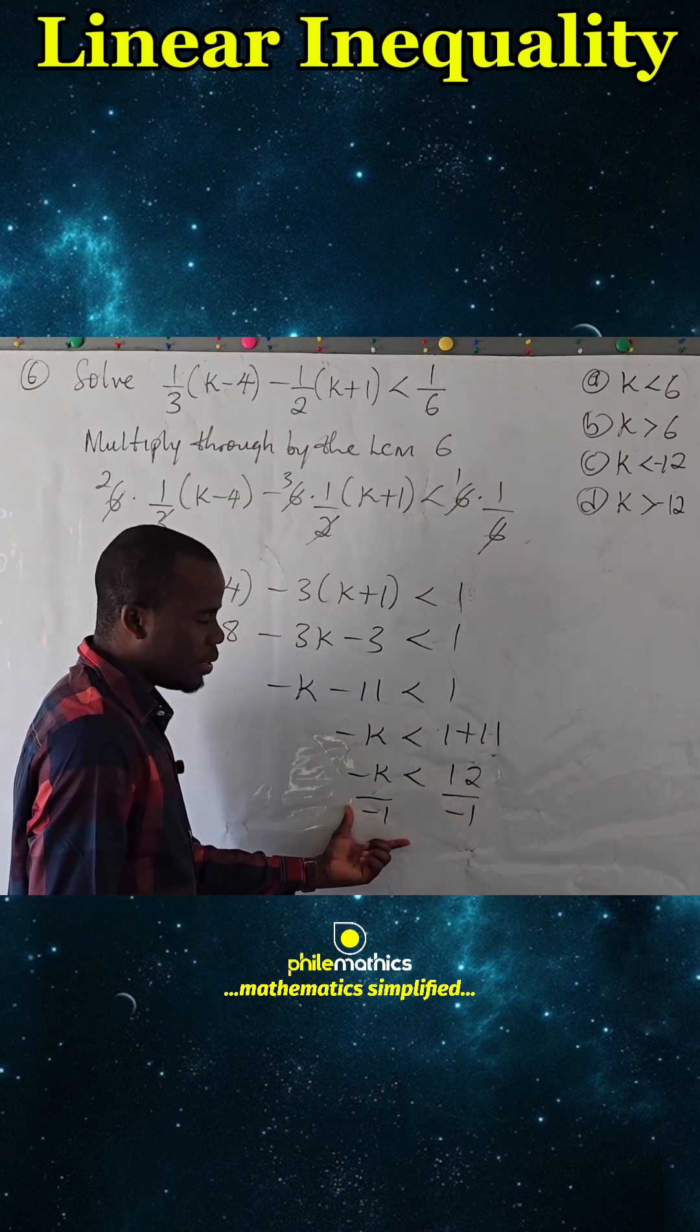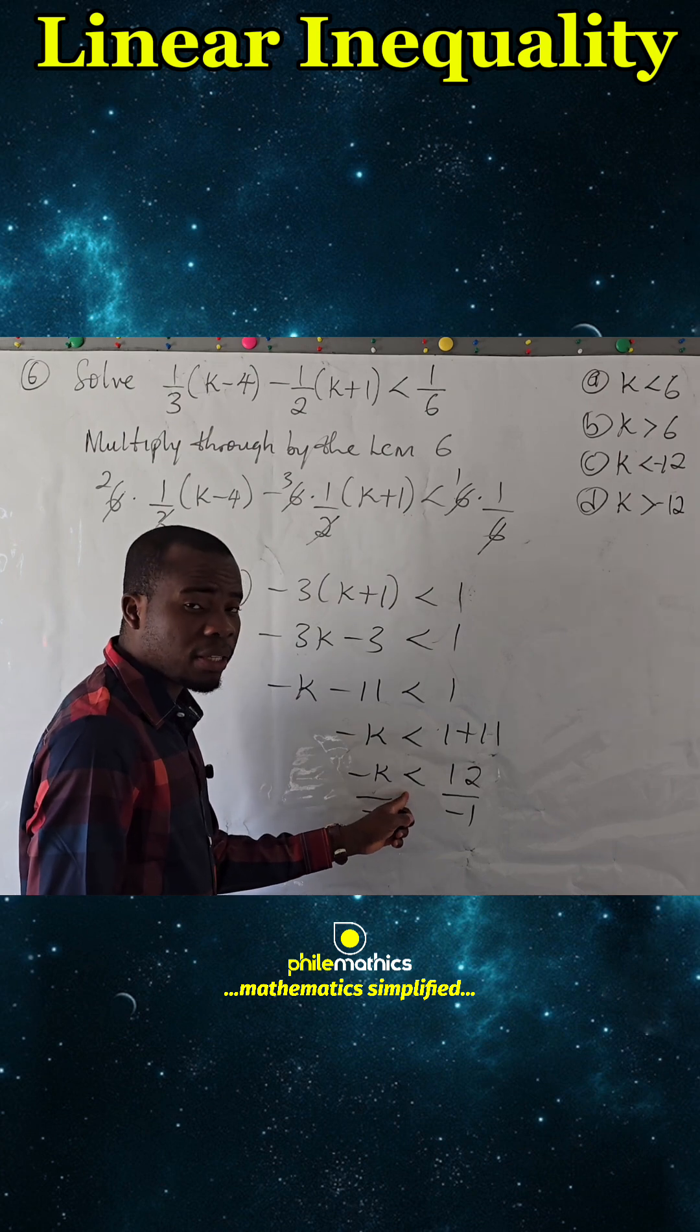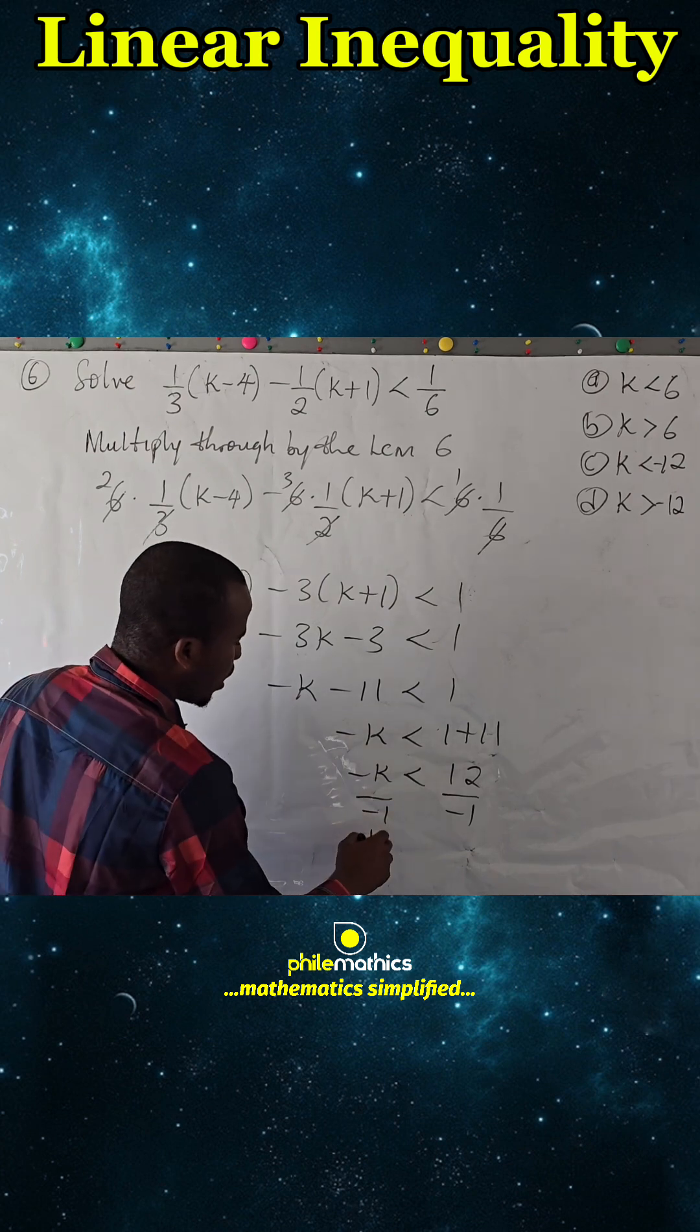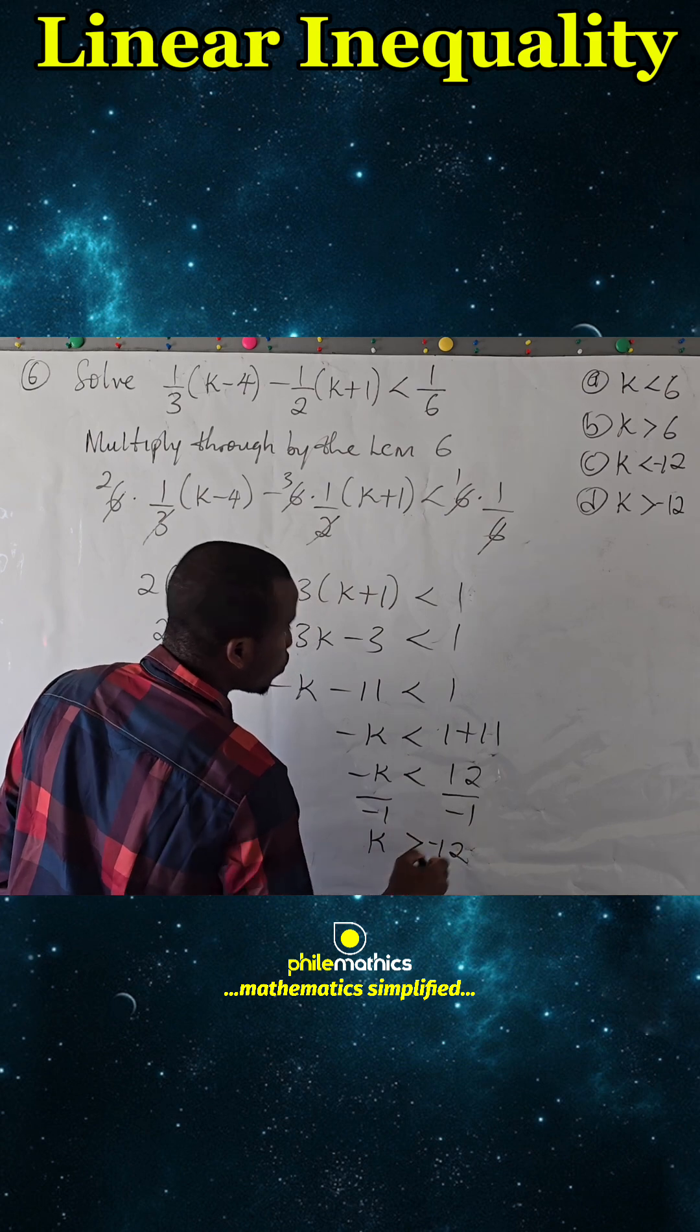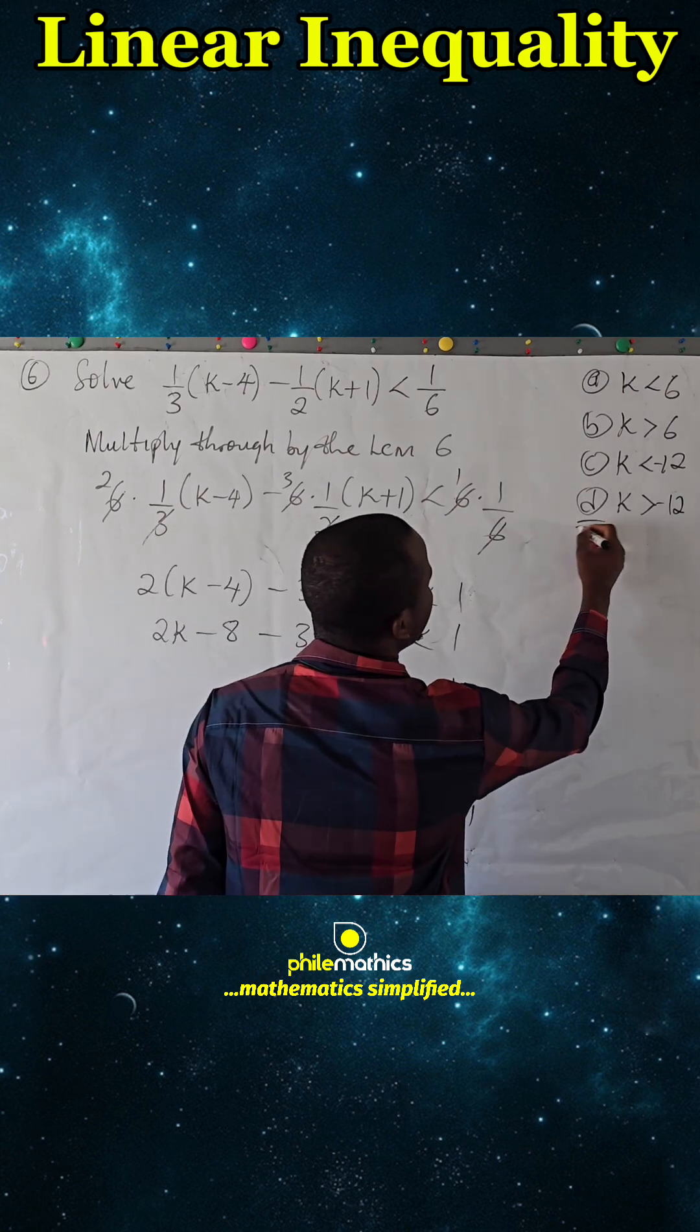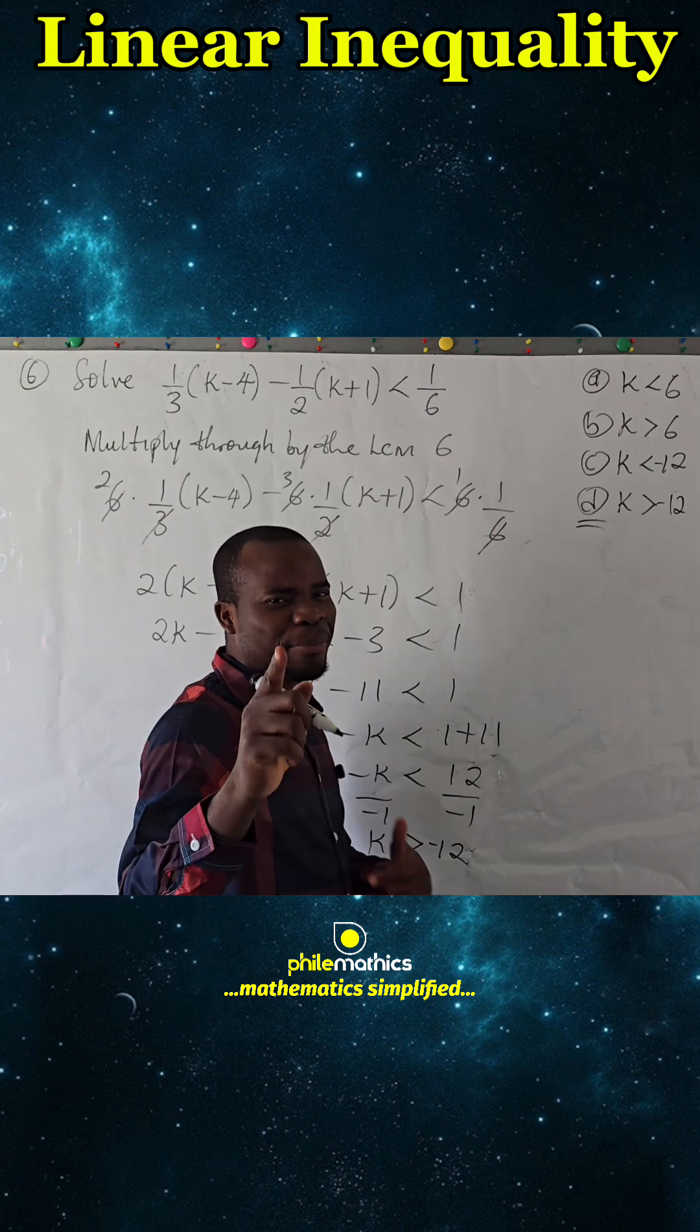When you divide an inequality by a negative number, the inequality symbol changes. So k will be greater than minus twelve, which is the answer. Thank you for watching, make sure you like and subscribe.